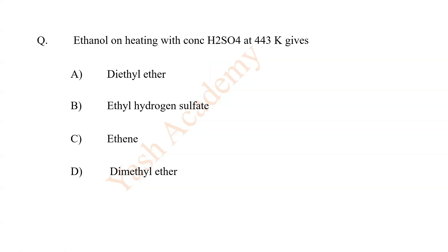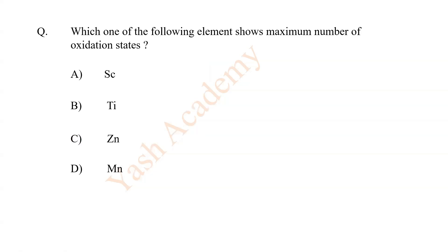Ethanol on heating with concentrated sulfuric acid at 443 Kelvin gives C. Ethene. Which one of the following elements shows maximum number of oxidation states? D. Mn.